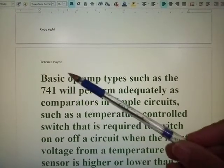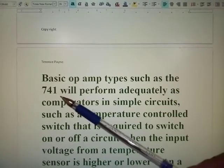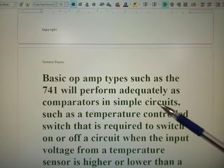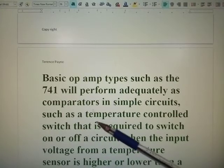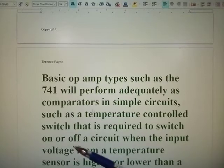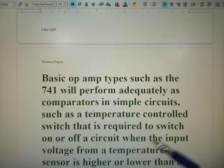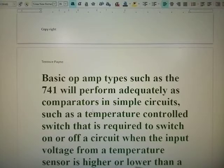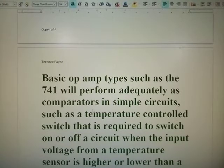Now basic op-amp types such as the 741 will perform adequately as comparators in simple circuits such as a temperature control switch that is required to switch on or off a circuit when the input voltage from a temperature sensor is higher or lower than a preset reference value.